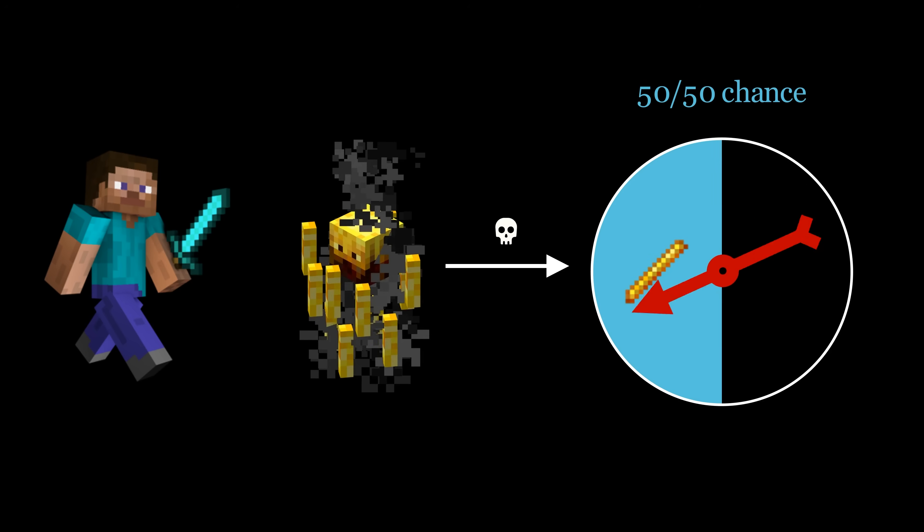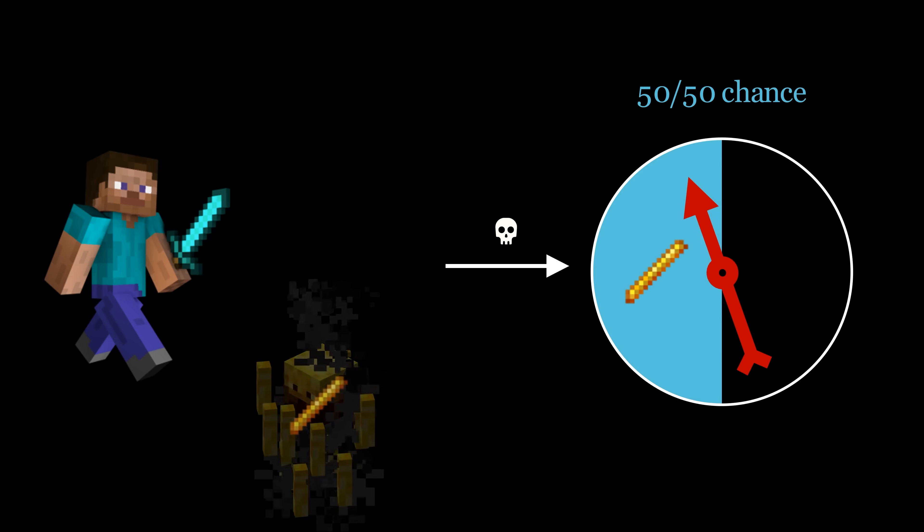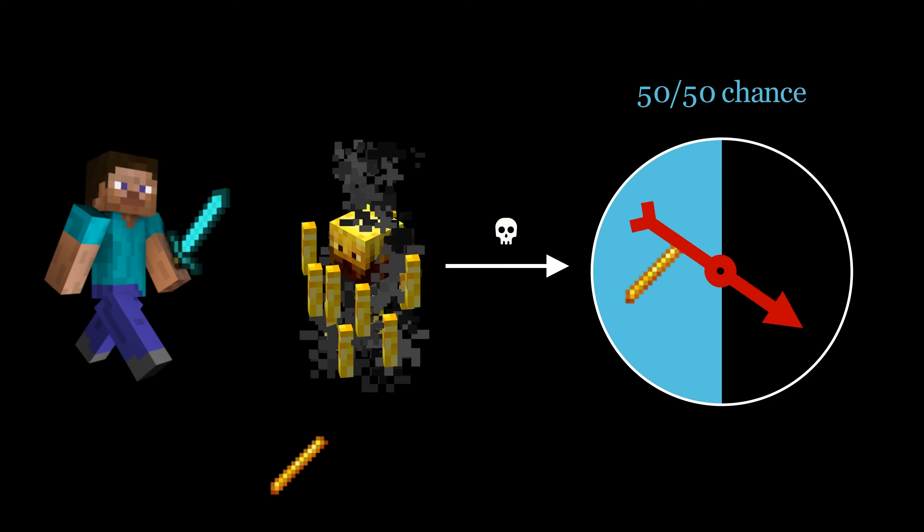Beating this game involves hunting blaze enemies to collect blaze rods. Each blaze that you kill has a 50% chance to drop a blaze rod, and a 50% chance to drop nothing.